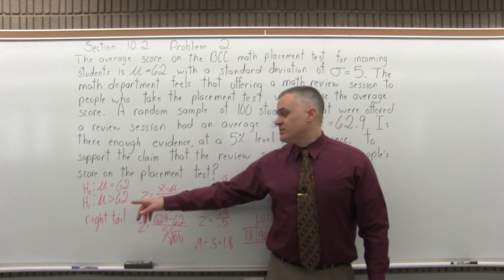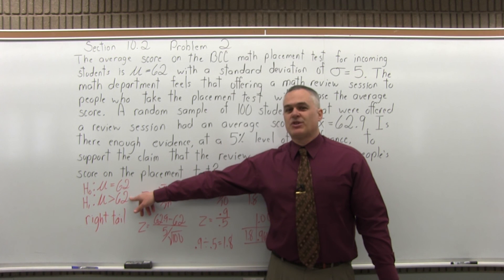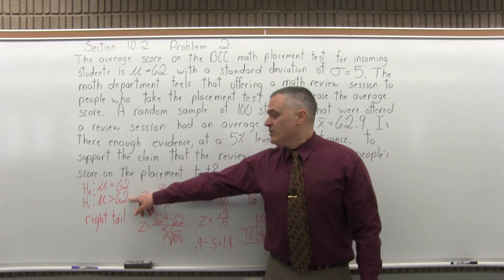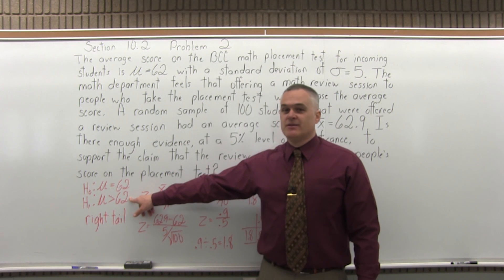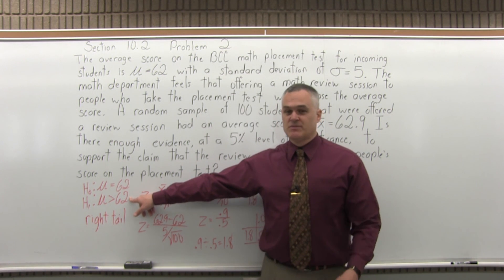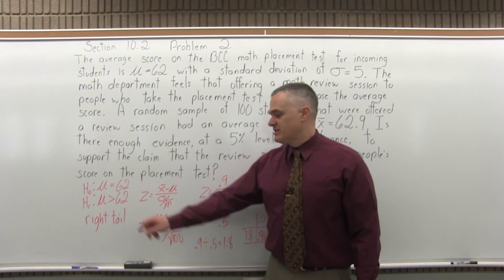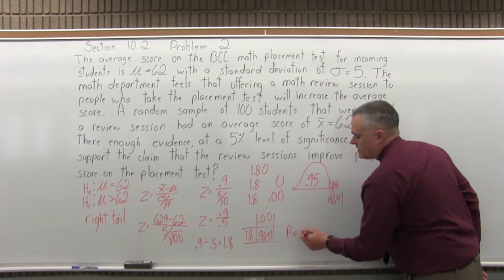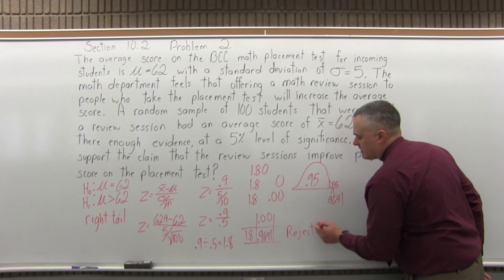So you don't word it to say accept the alternate hypothesis. You have to say reject the null hypothesis, which means most likely the average on the placement test score has increased. So the final step, step 6, you want to write reject null, or you could put H sub 0.